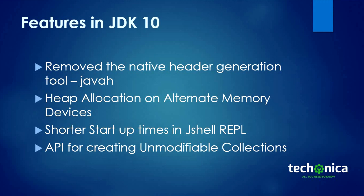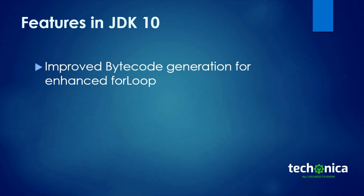Next is the API for creating unmodifiable collections. Java 10 has added new functions: List.copyOf, Set.copyOf, and Map.copyOf. These functions all return an unmodifiable copy — it is a shallow copy. We will have a POC session covering the details of these changes for JDK 10.